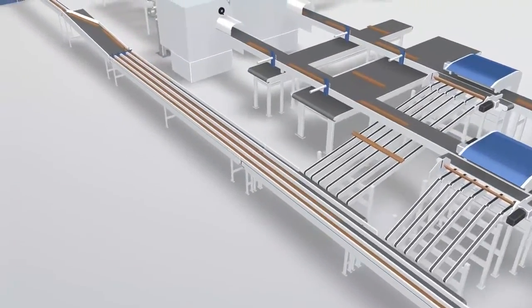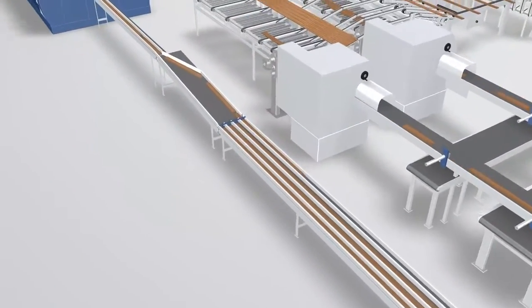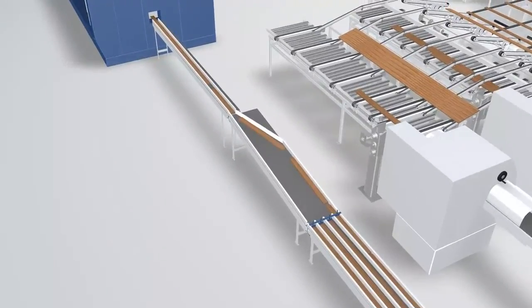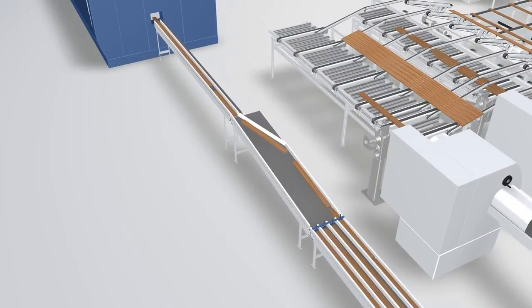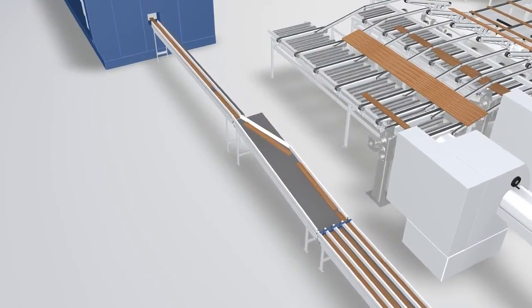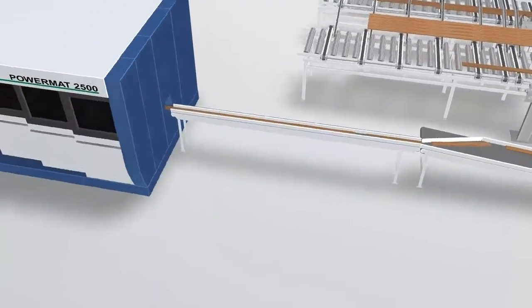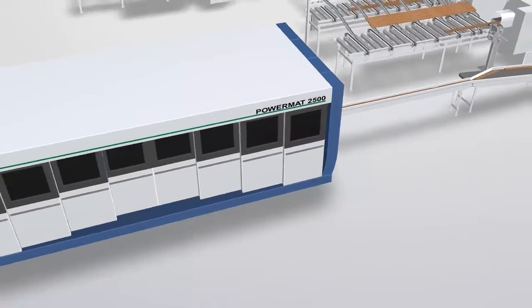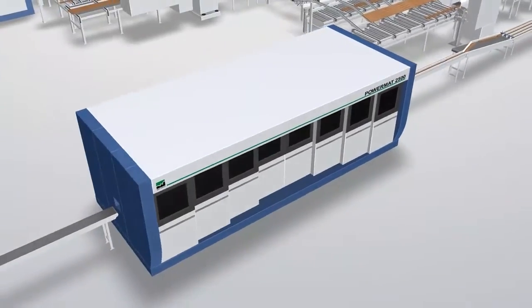By guiding the strips into a channel in front of the Paramat 2500 the machine can be fed butt to butt. The Paramat does the final profiling process with the Wynick precision and quality that you can rely on.